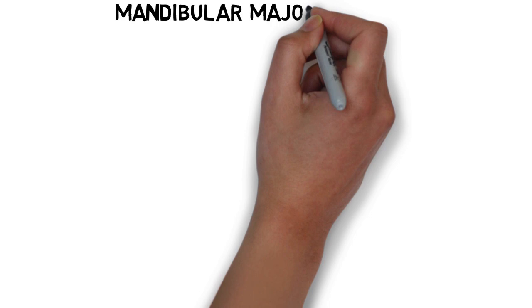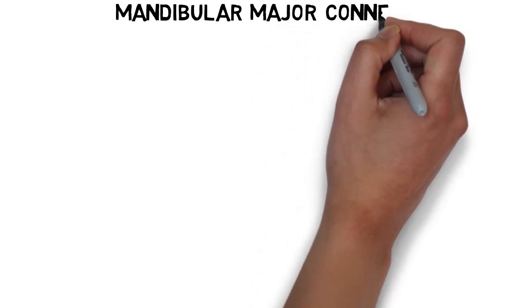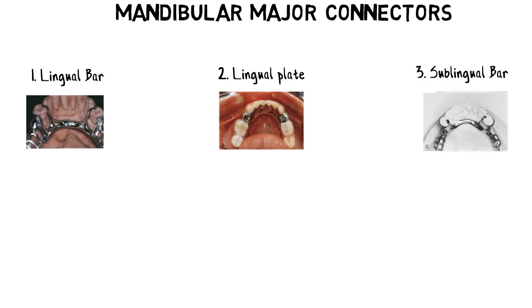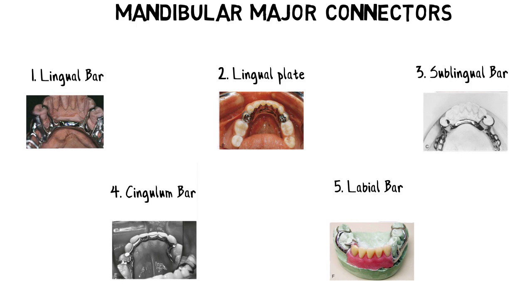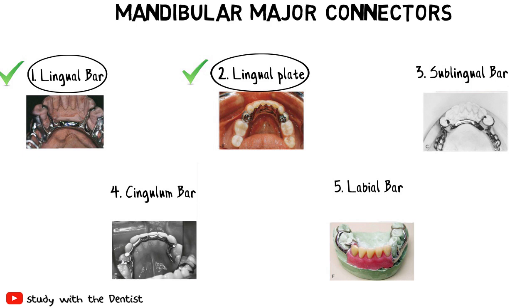In this lecture we will be briefly looking into the different major connectors used in mandibular removable partial dentures. There are basically five different types: the lingual bar, the lingual plate, the sublingual bar, the cingulum bar, and the labial bar. The lingual bar and lingual plate are the most commonly used, while the remaining three have specific indications.